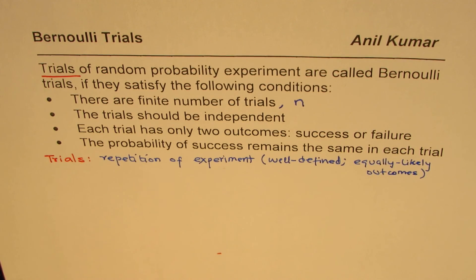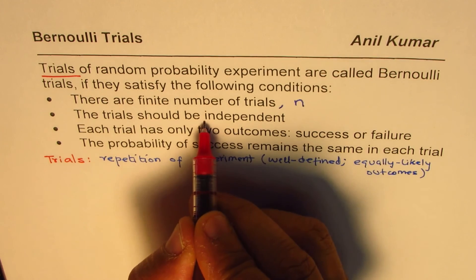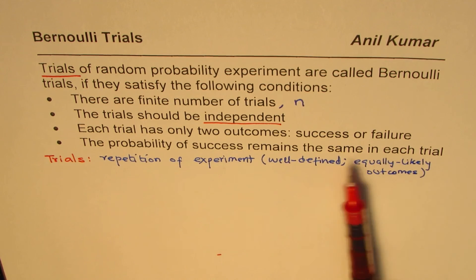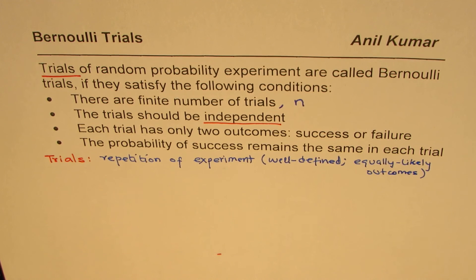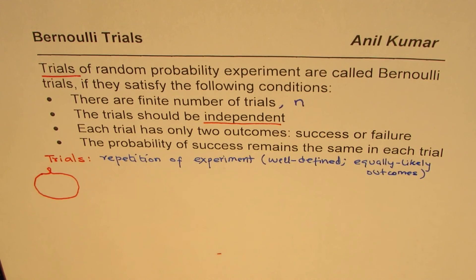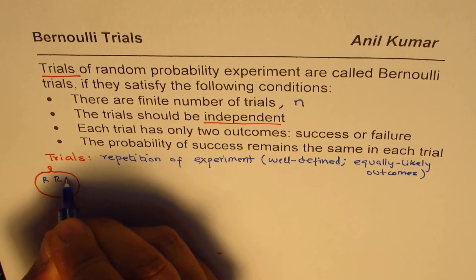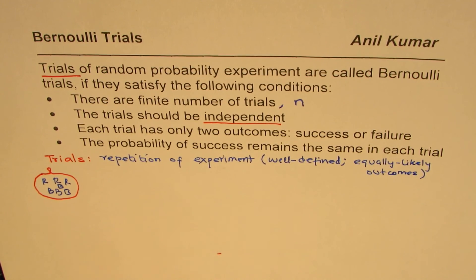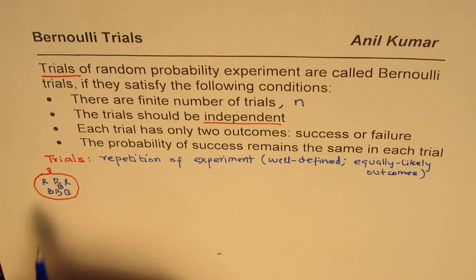The second condition is the trials should be independent. What does that mean? Independent really means that every time you do the experiment, you get the same likelihood of results. What is not independent? Let's say I have a bag with some red balls and some blue balls — let me make four blue balls, so we have seven balls in this bag. I randomly pick up a ball from this bag. I could pick up red or blue; it's equally likely to pick up any one of these.